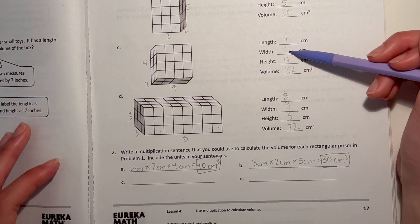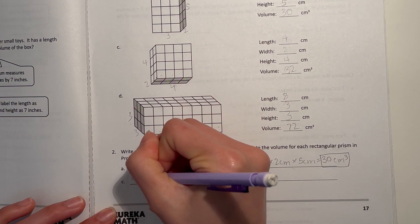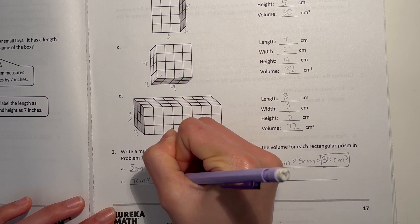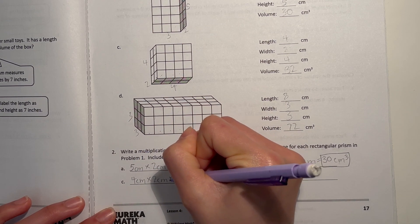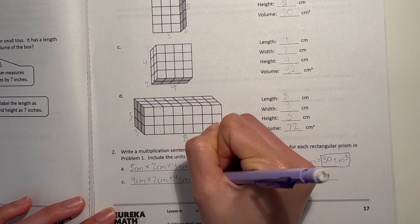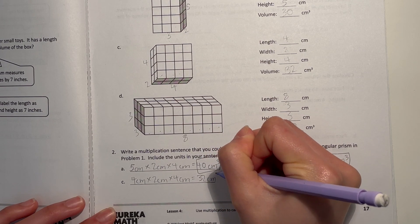Now C, it's four times two times four, so four centimeters times two centimeters times four centimeters, and we got 32 centimeters cubed.